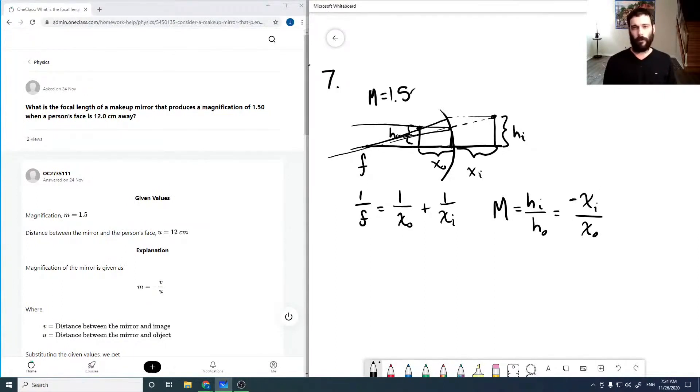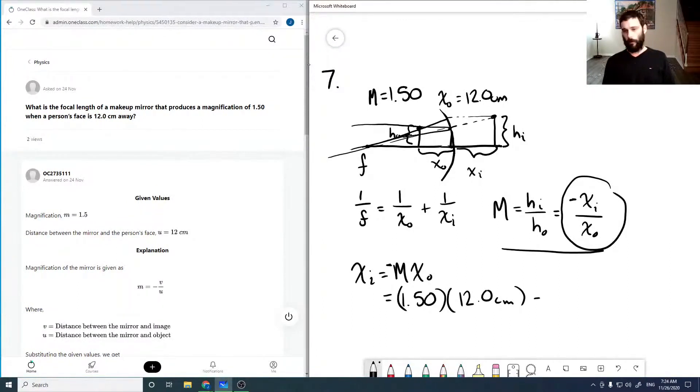So we're given that magnification is 1.50 and that x_o is 12.0 centimeters. So that means solving this magnification equation, the x_i is M times x_o with a negative sign, which is 1.50 times 12.0 centimeters, which comes out to be minus 18 centimeters. So the assumption that we had a virtual image is correct.